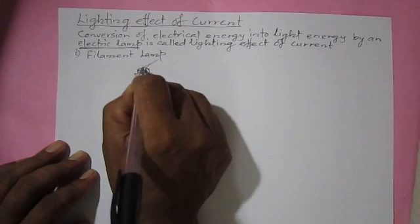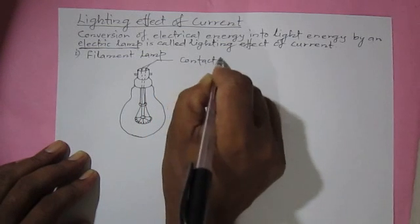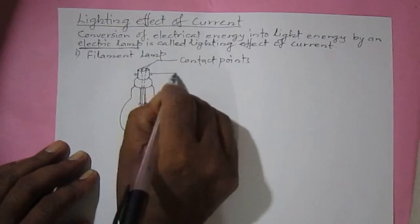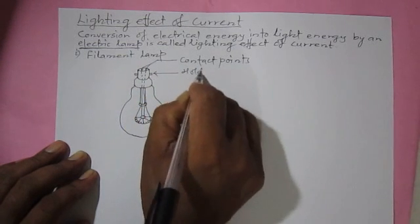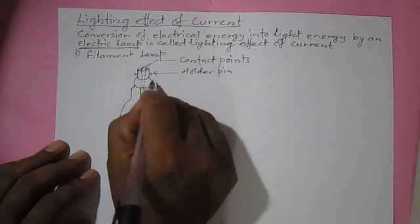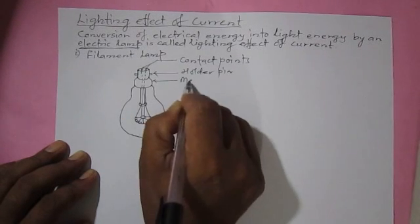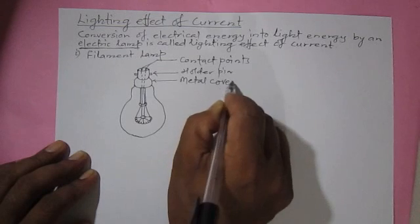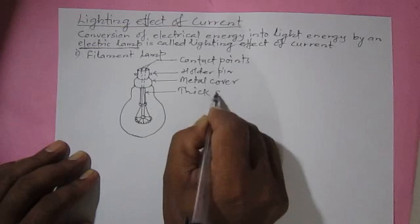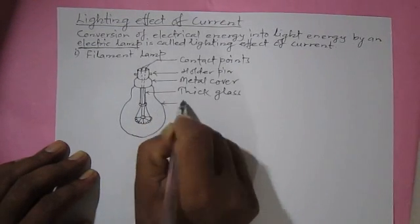These two are contact points, and this is the holder pin. Because of this holder pin, the lamp can be inserted into and fixed into the holder. This is the metal cover, this is the thick glass, and this is the thin glass bowl.